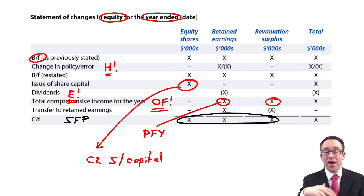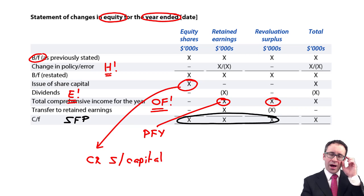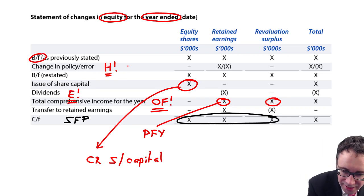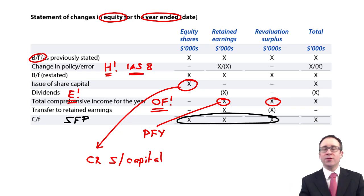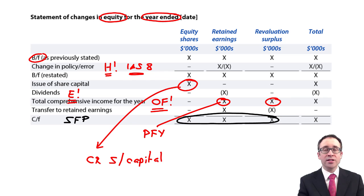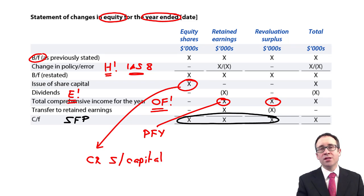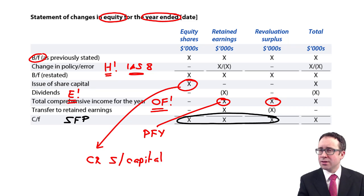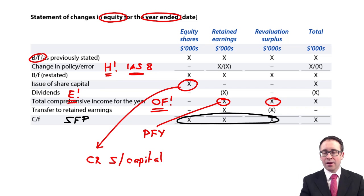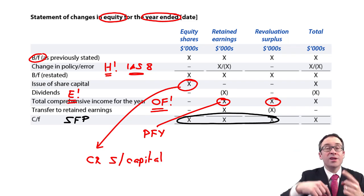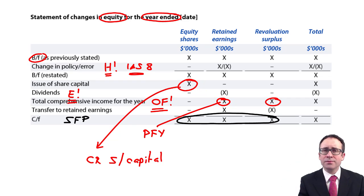Something a little harder: if they give you the prior year error figure it's easier, but if they don't you've got to calculate it. IAS 8 deals with accounting policies, changes in accounting estimates, and errors. If there is a change in policy or a prior year error, we need to go back and restate the prior year figures. Once restated, that will potentially result in a change to profits, which changes last year's retained earnings, and you'll need to adjust those opening retained earnings — either increasing or decreasing them. Remember if you're decreasing them, put them in brackets.